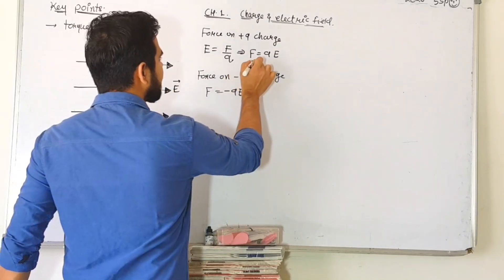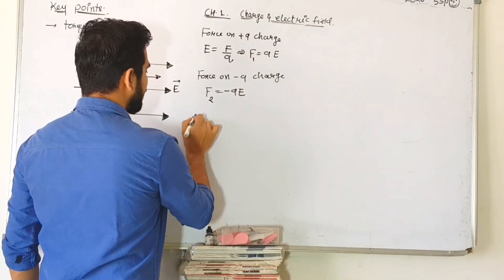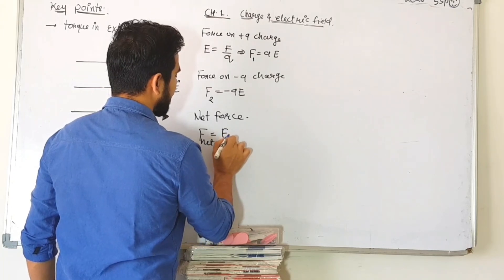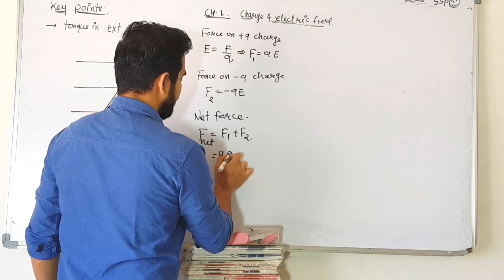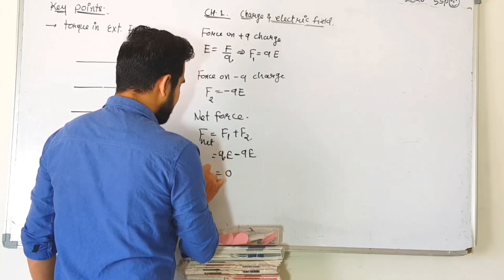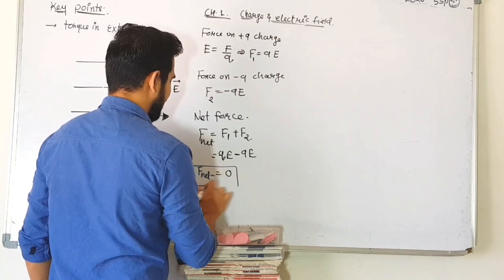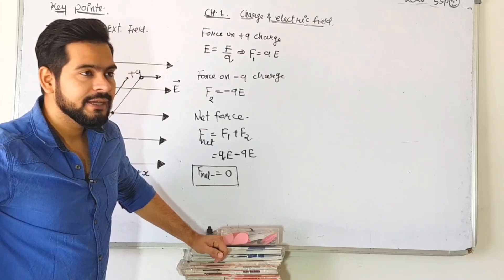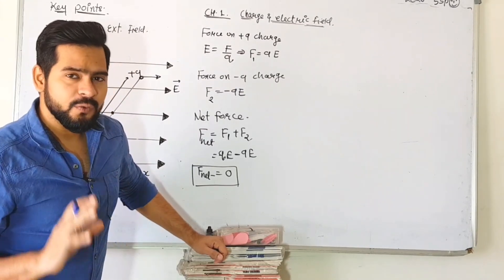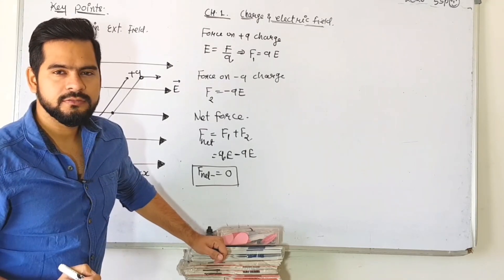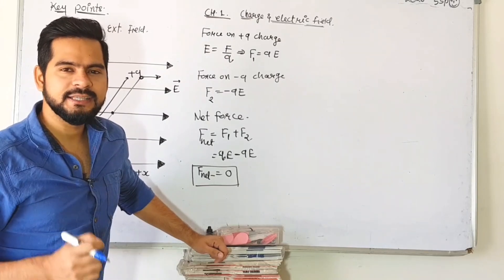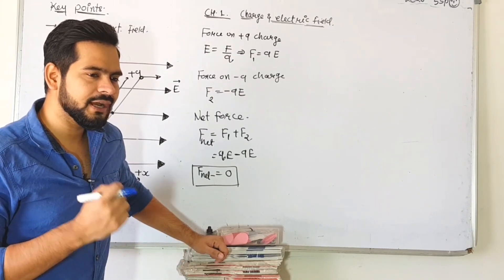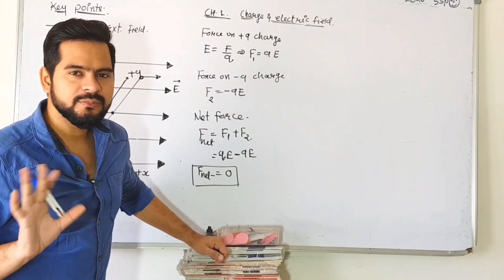Now one thing is clear. If I take the sum of these two forces — the net force — you can clearly see that F net equals F1 plus F2, which gives plus qE plus minus qE. The answer is zero. So the net force is zero. If the external net force on the body is zero, will that body move? No, because as long as the net force on a body is zero, the body will not move — there will be no linear motion.